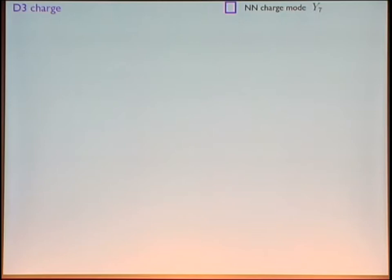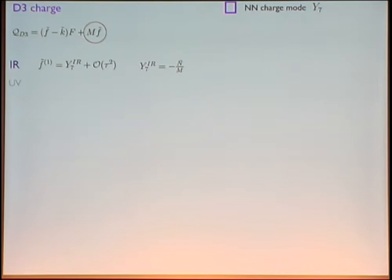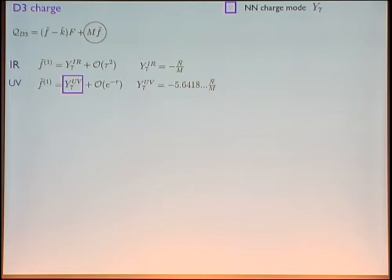Let me say more about this non-normalizable mode Y7. If we compute the Maxwell D3 charge, in the IR and UV it is dominated by the leading term. In the IR, this F-tilde equals Y7_IR, and our boundary conditions say Y7_IR equals minus N-bar over M, so we get D3 charge equals minus N-bar — obviously what we impose. But in the UV, the constant is Y7_UV. Doing the numerics, we find Y7_UV equals approximately minus 5.6418 times N-bar over M — a number that up to 40 digits does not seem to repeat itself, is not rational, and is not recognizable as any simple combination of known constants.